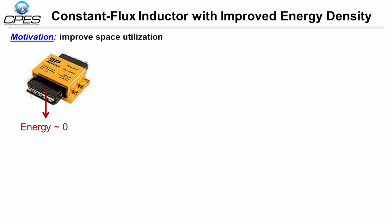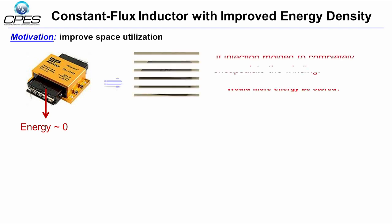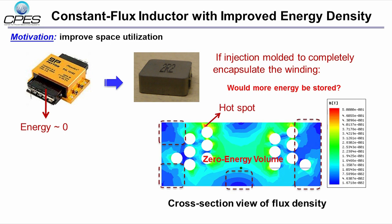The picture on the left shows a commercial inductor with enclosed winding geometry. As you can see, the inductor has a large area with zero energy, so the average energy density is relatively low in this kind of structure. And even if the winding is completely encapsulated by the core material, there is still a large area with blue color, which suggests very low flux density. And the red color suggests hot spots.